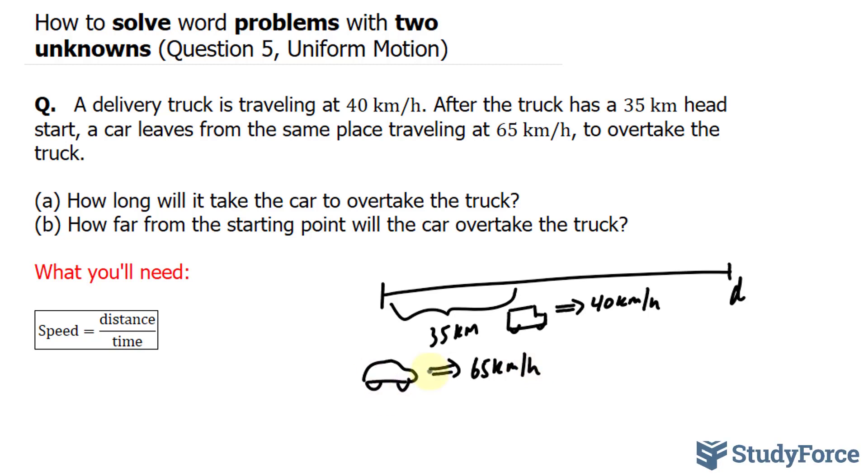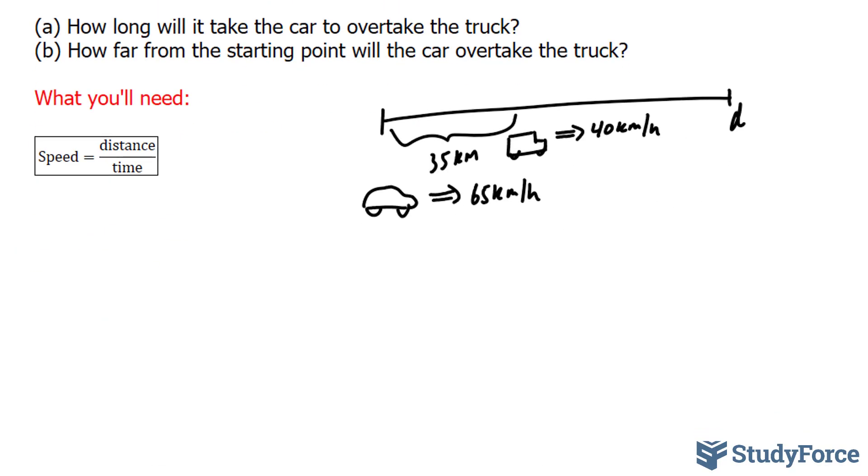The formula that we'll use to model the car and the truck will be based off the formula for speed, which is shown right here, and that's distance over time. And since there are two unknowns, both distance and time are unknown, we'll need to create a minimum of two equations, one for the car and one for the truck.